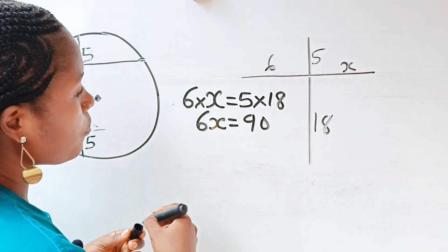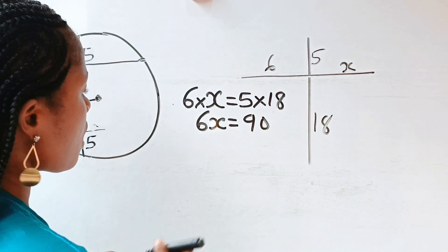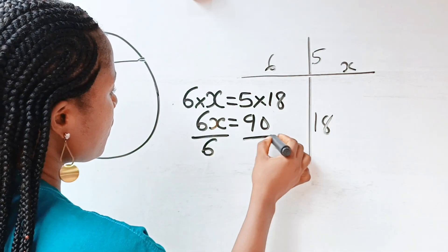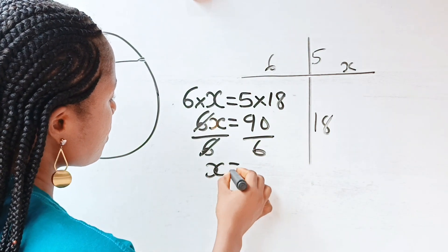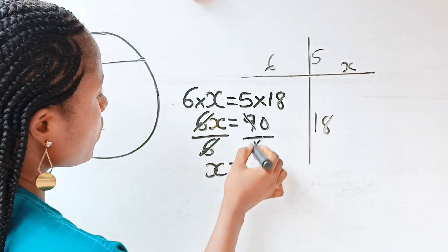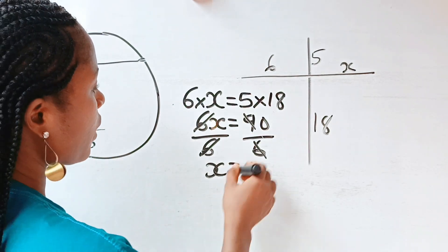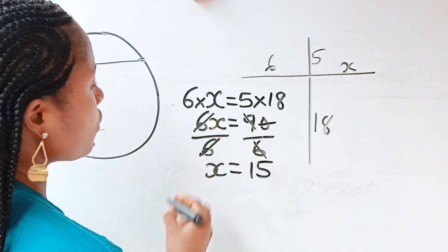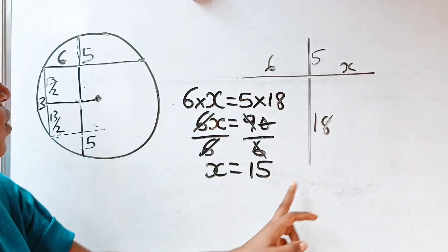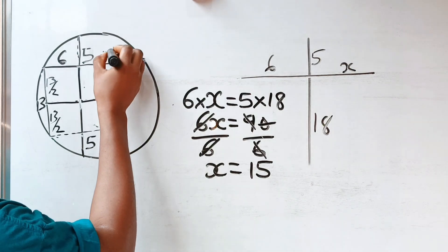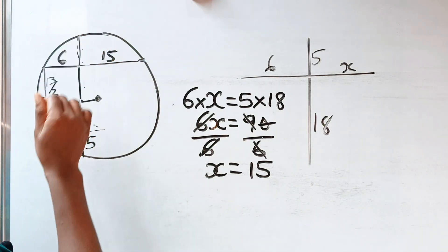So 6x equals 90. To get x, we divide both sides by 6: x equals 90 divided by 6, which gives us 15. So this side is 15.